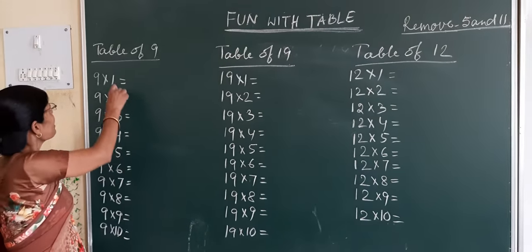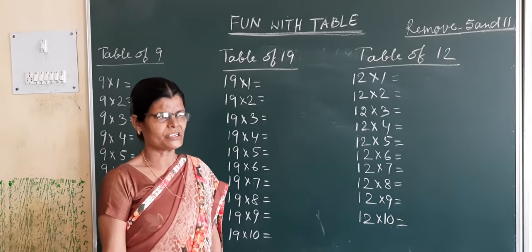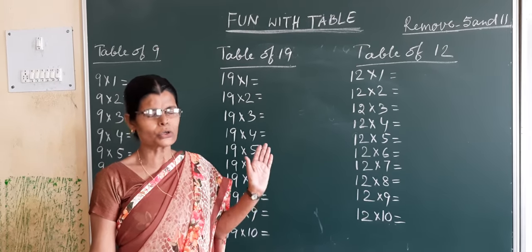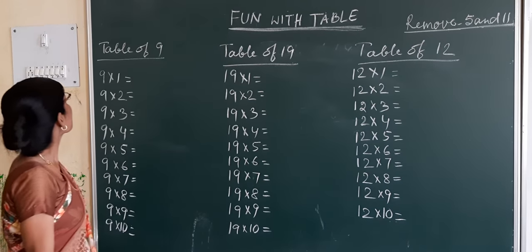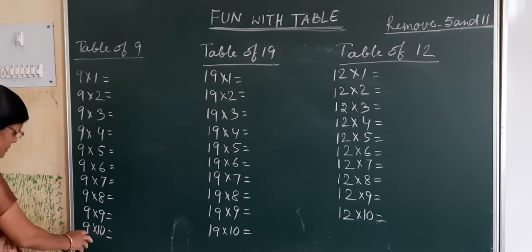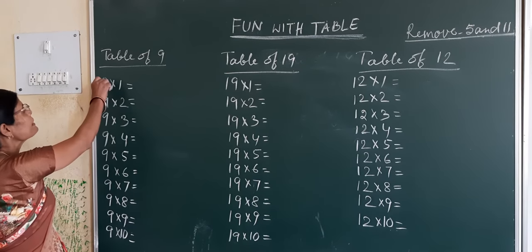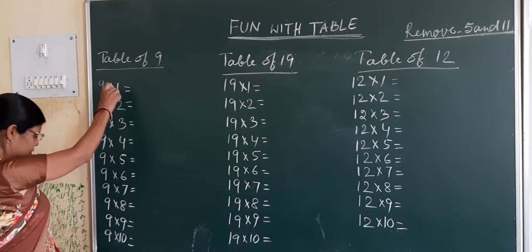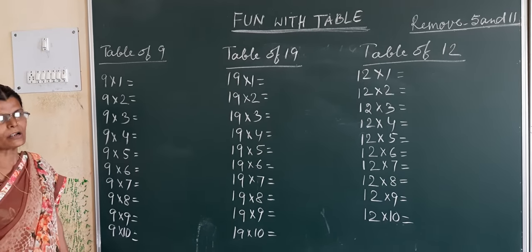See the table of 9. All of you are familiar with table of 1 to 8. 9 is little difficult. That's why I am talking about table of 9. Write the table of 9. All of you memorize the table of 9.